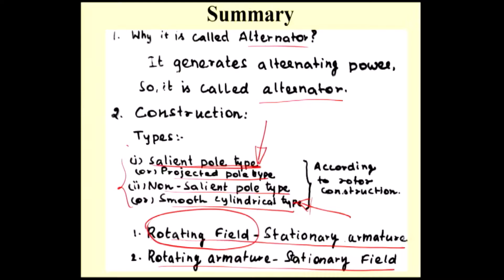This may be suitable for high speed application. Salient pole alternator produces more noise and is mechanically weak compared to non-salient pole alternator.